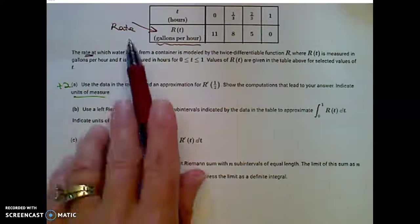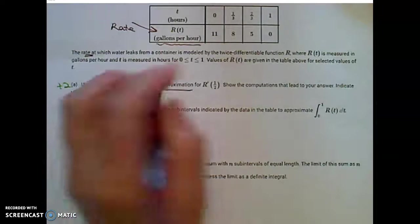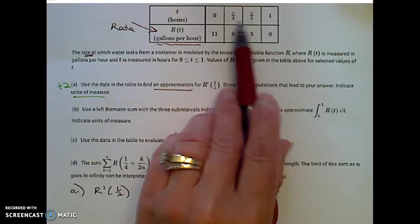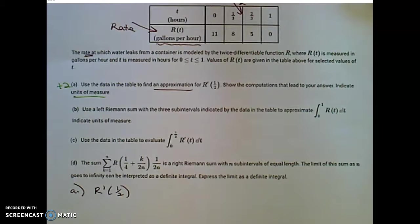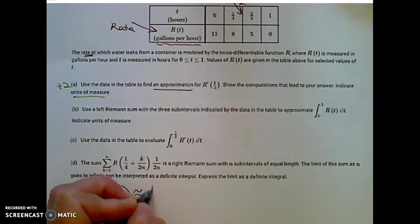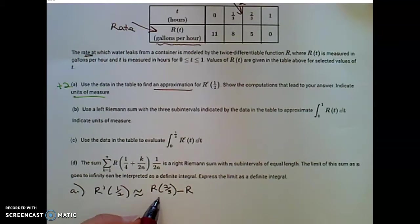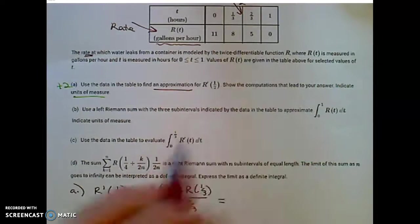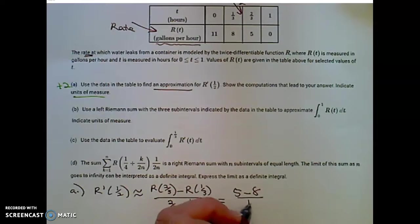This is a rate of change of this rate. It's an approximation because I have to use values in my table. And if I want the rate of change at 1 half, I'm going to use those symmetric values that are closest in my table to 1 half. And 1 half is right in between 1 third and 2 thirds. So I'm going to approximate that derivative with the slope of those symmetric points around time of 1 half. So R of 2 thirds minus R of 1 third over 2 thirds minus 1 third. These are table values. So R of 2 thirds is 5 minus R of 1 third, which is 8, all over 2 thirds minus 1 third, which is 1 third.